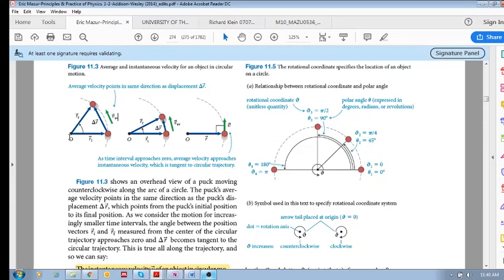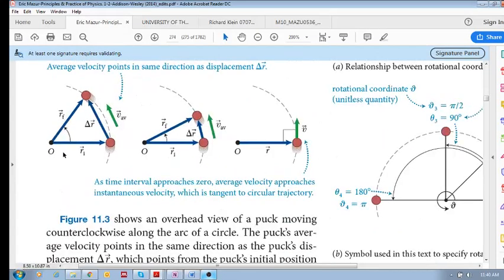Well, we know that initial position plus your delta r gives you your final position, right? R initial plus delta r gives us r final. And what we know is that if we divide this by our delta t, we have our average velocity.